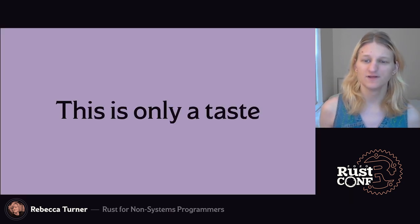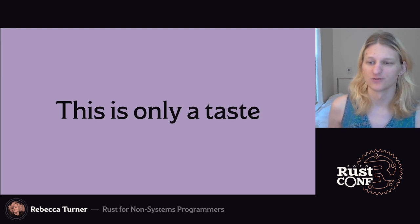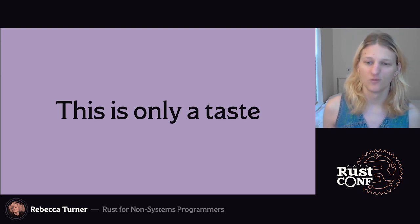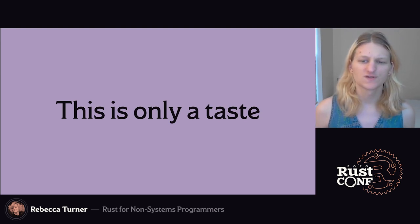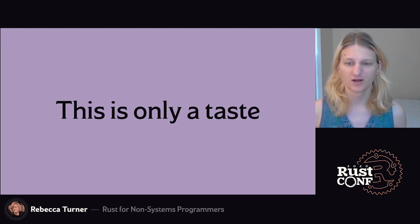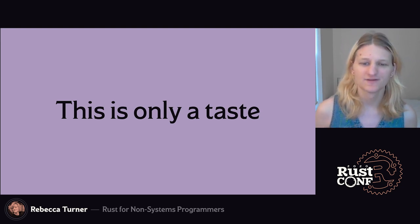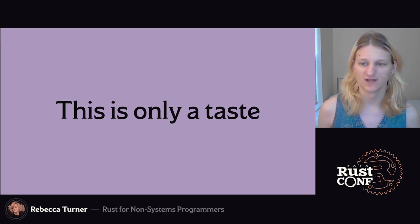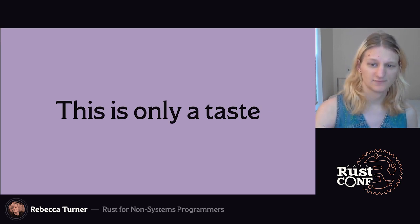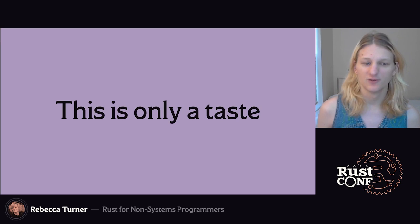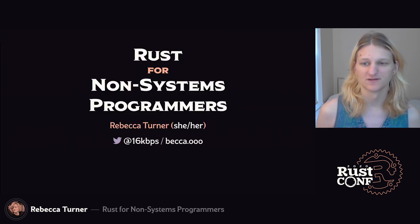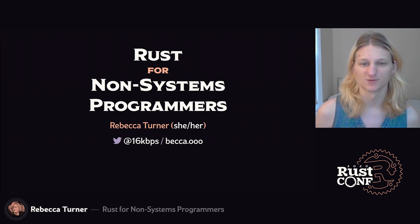Everything I talked about is just a tiny portion of what you can do with Rust and what Rust can do for you. There are so many features and tools I wanted to talk about that I didn't have time for — things like adding methods to foreign types, type-safe numbers, unit conversions, and more. Thanks so much for listening, and I hope you do some amazing things with Rust. I'm Rebecca Turner, and this has been Rust for Non-Systems Programmers. Have a good one.